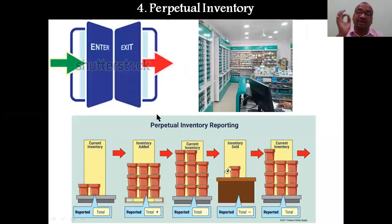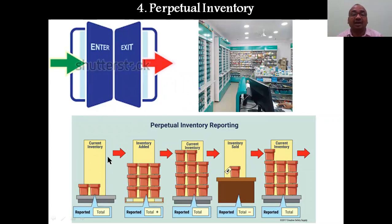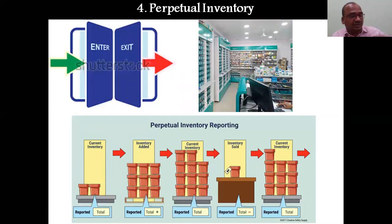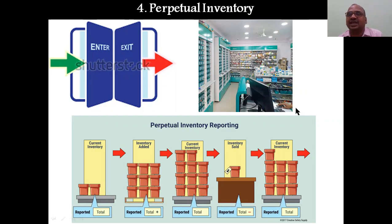Perpetual inventory is a perfect and very simple system. I observed this practically in Apollo Pharmacy. Here, each and every item entering and exiting the shop is entered into the computer. When a pharmacist dispenses 10 tablets of Dolo 650, he enters it into the computer and the stock automatically reduces by 10. Whenever stock goes low, the system shows a red signal warning, indicating it is time to reorder.